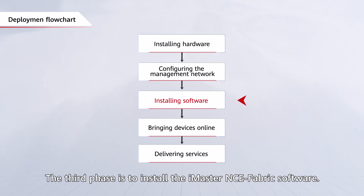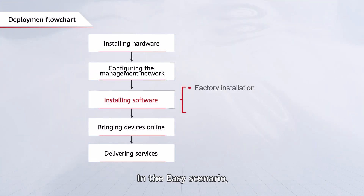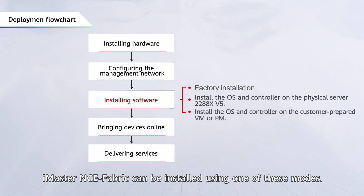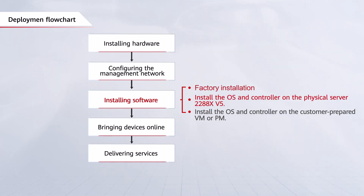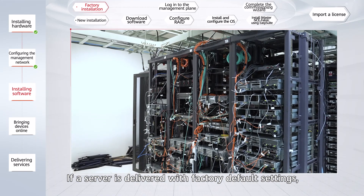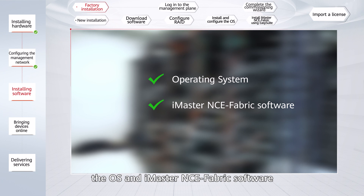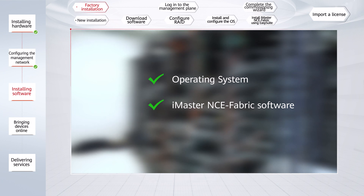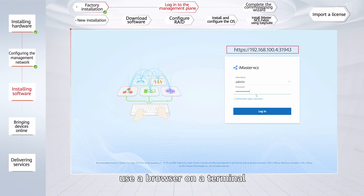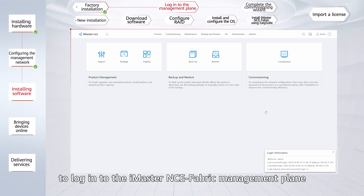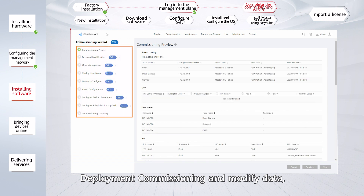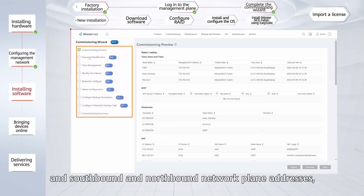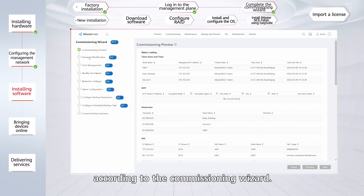The third phase is to install the iMaster NCE Fabric software. In the easy scenario, iMaster NCE Fabric can be installed using one of several modes; this video introduces the first two. If a server is delivered with factory default settings, the OS and iMaster NCE Fabric software have already been installed. In this case, use a browser on a terminal to log into the iMaster NCE Fabric management plane through the default address. Choose Commissioning, Deployment Commissioning, and Modify Data — such as the host name and southbound and northbound network plane addresses — according to the commissioning wizard.